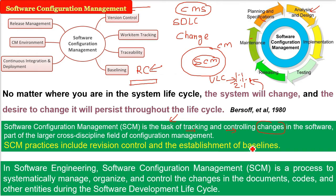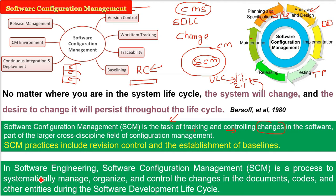In software engineering, SCM — software configuration management — is a process to systematically manage, organize, and control changes in documents, codes, and other entities during the SDLC. For example, think of your cabinet: you have placed your shirts, pants, trousers, and shoes properly, so whenever you want to access them, you can. Similarly, in SCM we control the documents, codes, and other work products produced during the software development lifecycle.